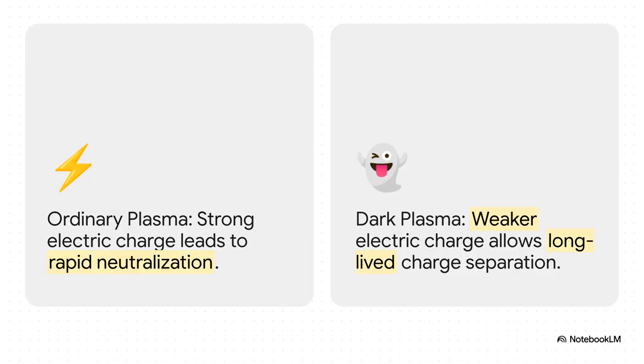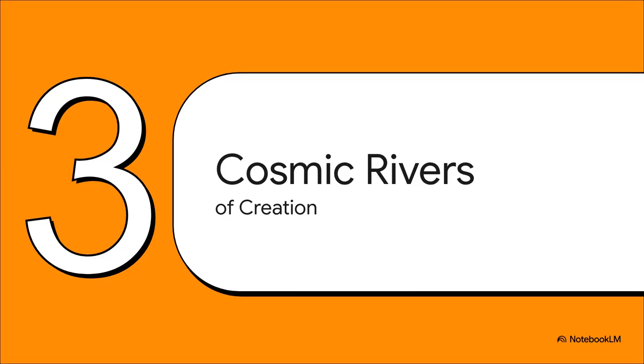J. Alfred's theory really hinges on this one key difference. Dark plasma has a weaker electric charge. That might sound like a small detail, but trust me, it has enormous consequences. It means that unlike ordinary plasma, where opposite charges are desperate to find each other and neutralize, in the dark sector, positive and negative charges can separate way more easily and stay separated over vast cosmic distances and for a very, very long time. And this ability to maintain charge separation over these huge scales—well, it allows for something absolutely incredible.